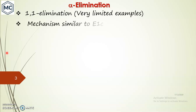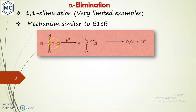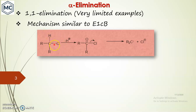The mechanism is similar to the E1cb mechanism. In E1cb, the first step is the formation of a conjugate base. In this particular example, the compound first gets deprotonated to form a carbanion. A very strong base is required to deprotonate it, and the proton should be acidic — so an electron-withdrawing group should be attached. Then the chlorine leaves from the same carbon, so hydrogen and chlorine are lost from the same carbon atom, finally forming a carbene.